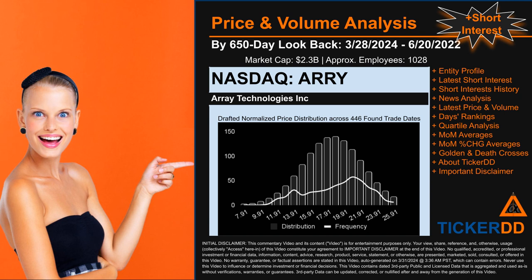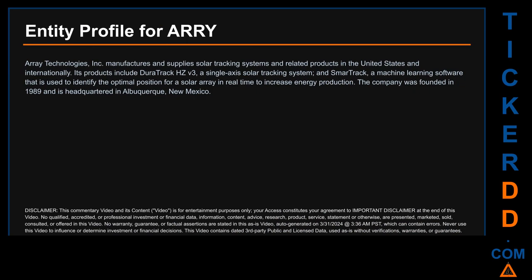Hello, my name is Carl. I searched the public web to find information about the company behind this ticker. Array Technologies Inc manufactures and supplies solar tracking systems and related products in the United States and internationally. Its products include DuraTrack HZv3, a single-axis solar tracking system, and SmartTrack, a machine learning software used to identify the optimal position for a solar array in real time to increase energy production. The company was founded in 1989 and is headquartered in Albuquerque, New Mexico.